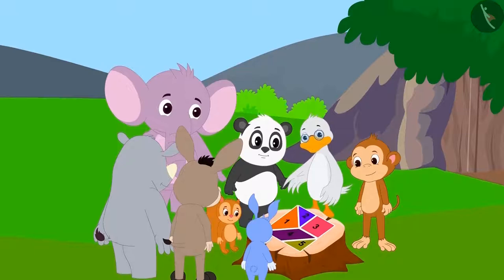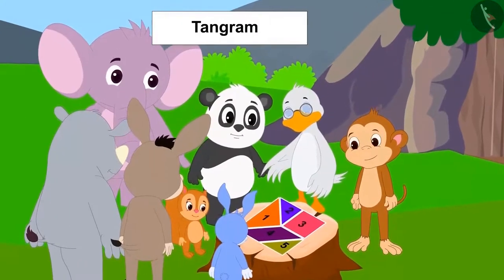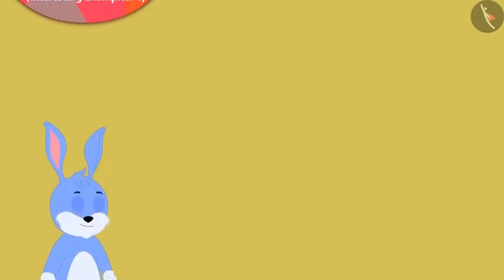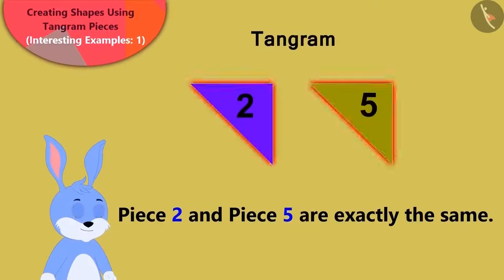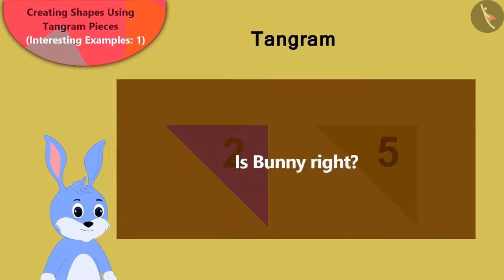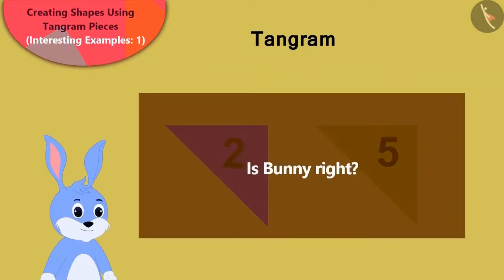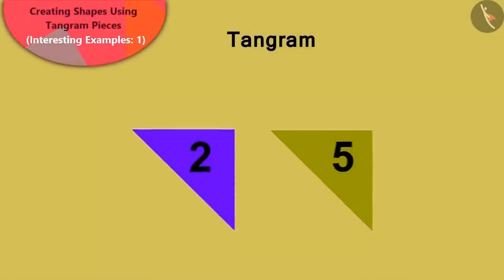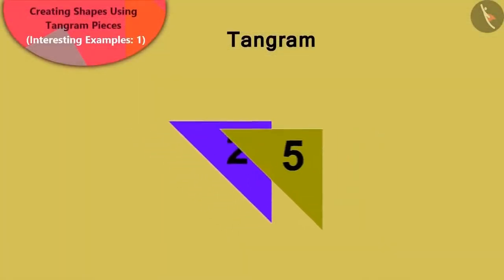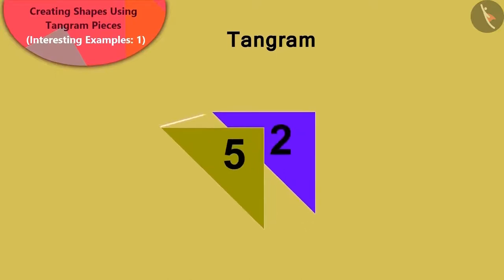Babban showed all the villagers how to make a Tangram. Bunny said that the triangular shapes among the Tangram pieces number 2 and number 5 were absolutely similar. Children, is Bunny right? Yes! If we take the triangular pieces number 2 and number 5 and pile them one on top of the other, then we will see that they are absolutely similar.